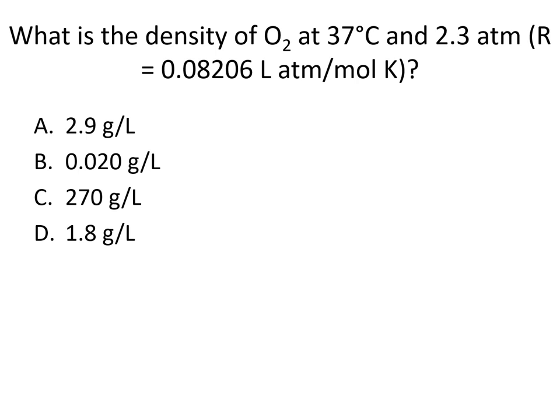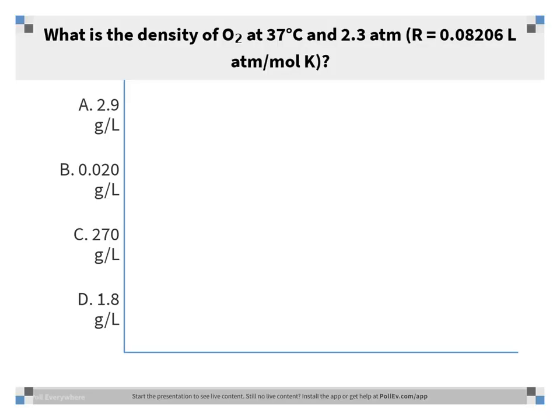In this question, you're finding the density of oxygen gas at 37 degrees Celsius and 2.3 atmospheres of pressure. The answer is A, 2.9 grams per liter. We use the equation density = P·M/(RT), remembering to get temperature in Kelvin. The molar mass of O2 comes from the periodic table — two oxygen atoms. Plugging in those values gives us the density directly.